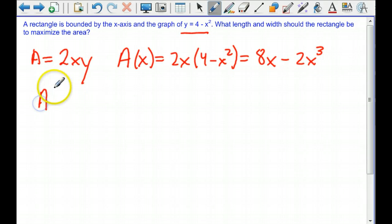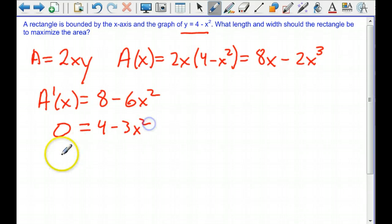We want to maximize that area, so we're going to take the derivative and set it equal to 0. So it's going to be 8 minus 6x squared. So 0 is 4 minus 3x squared. So 4 thirds is equal to x squared. So the x value we want is 2 over root 3.